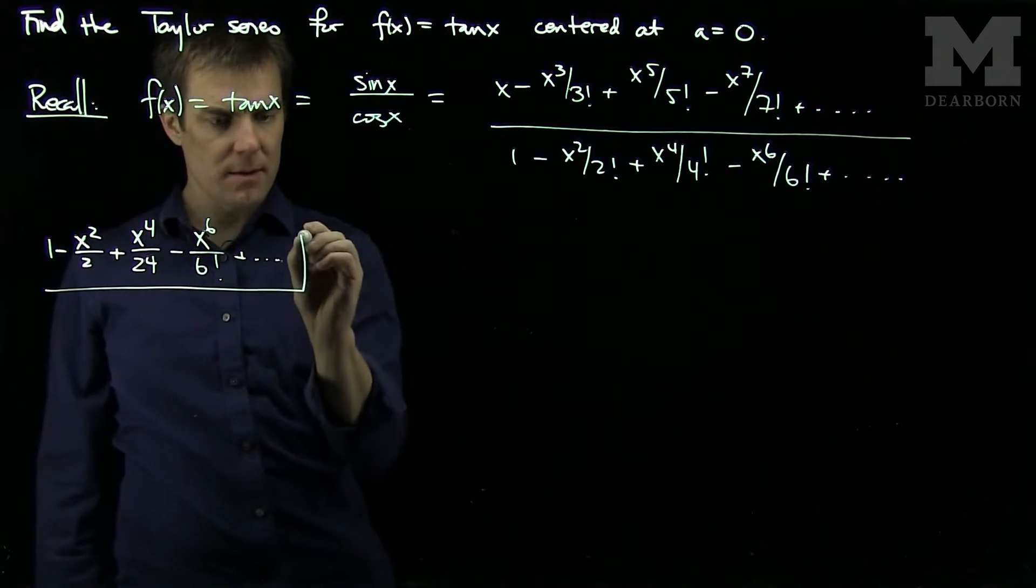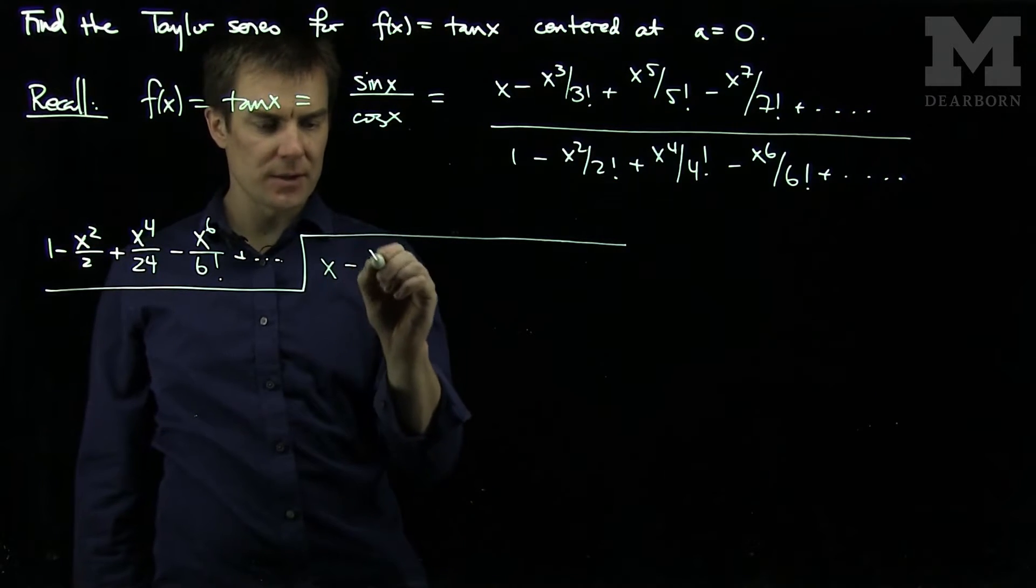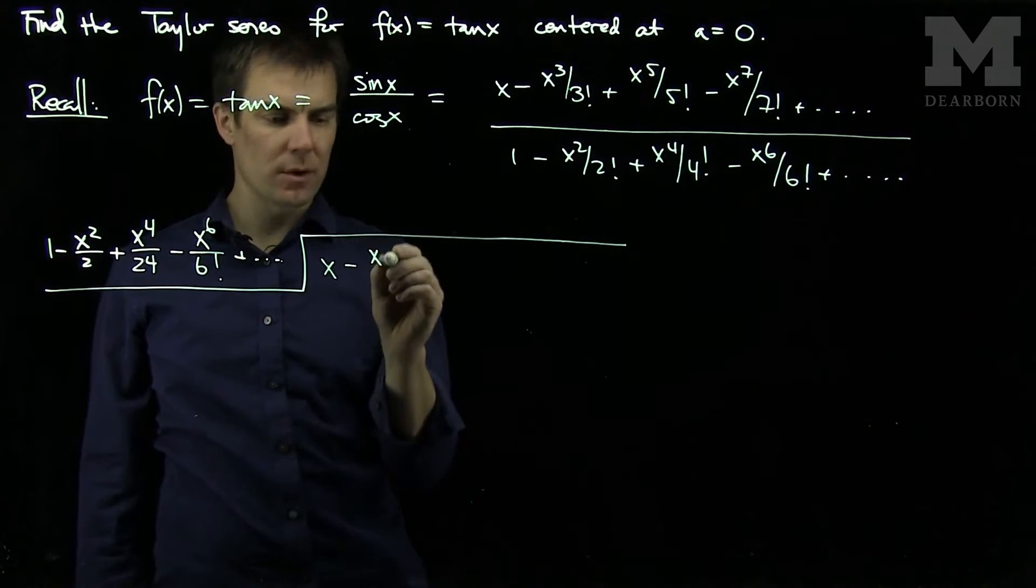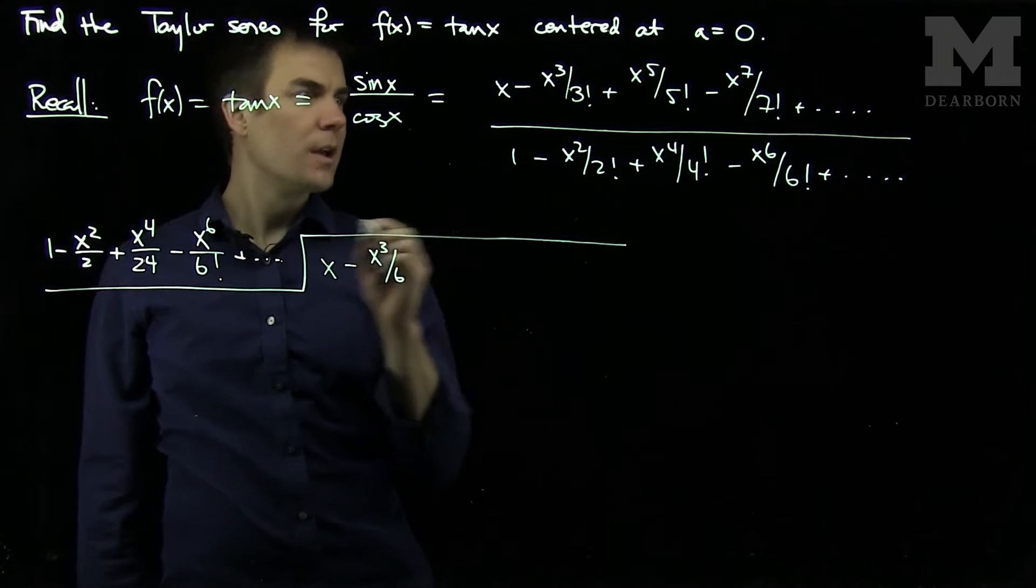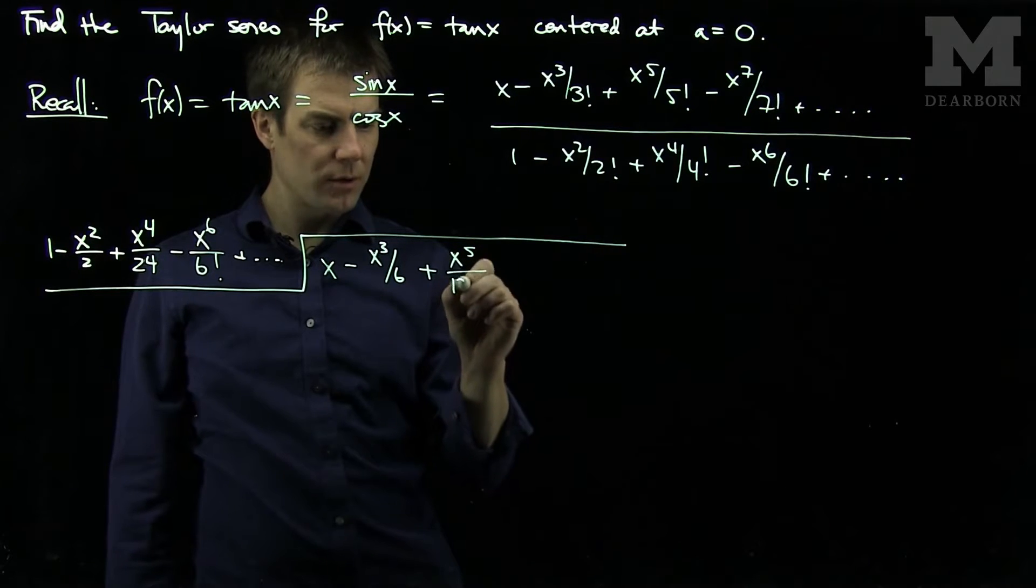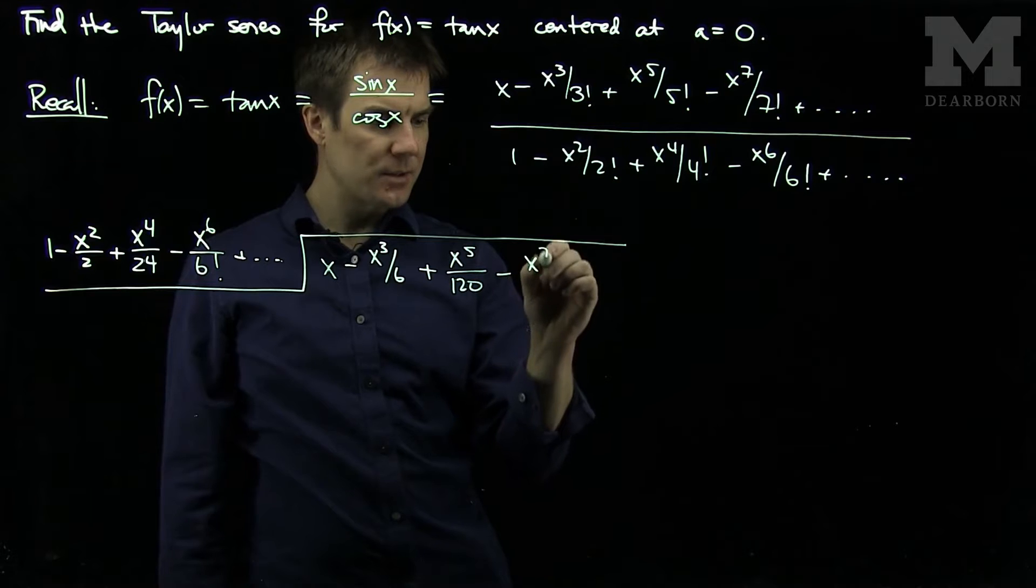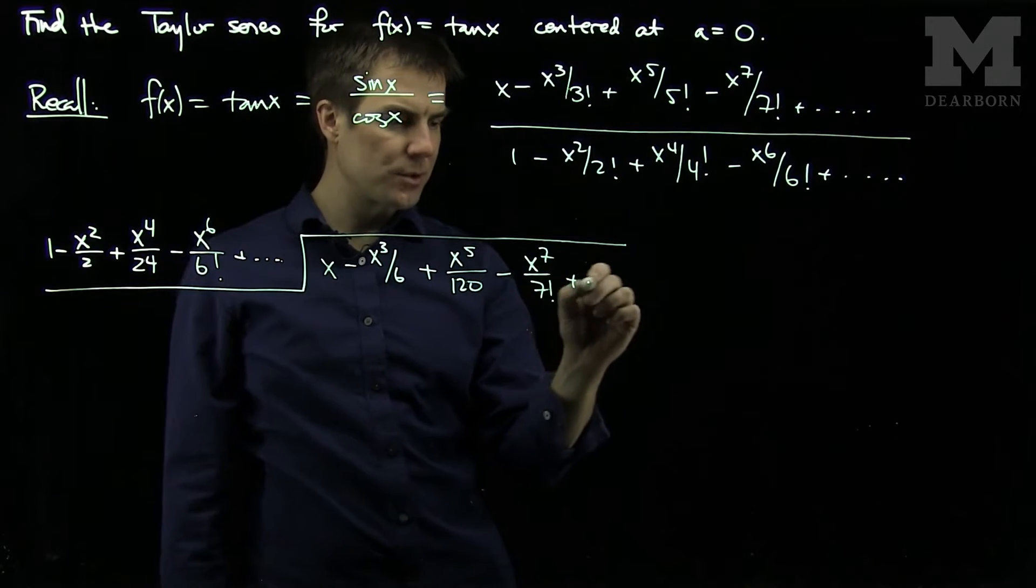Divided by x minus x cubed over 3 factorial, which is x cubed over 6. And then we have x to the fifth over 120. That's 5 factorial. And then minus x to the 7 over 7 factorial, and so on.